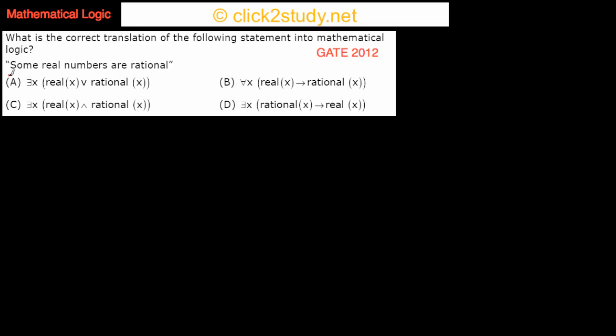The next question is: what is the correct translation of the following statement into mathematical logic — 'some real numbers are rational'? So we're saying that out of many real numbers, some are rational. We have to identify which option is correct.